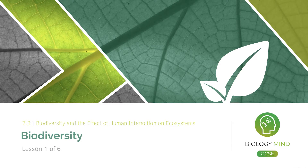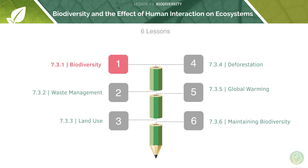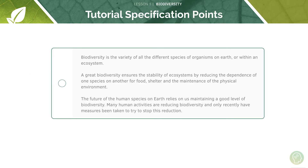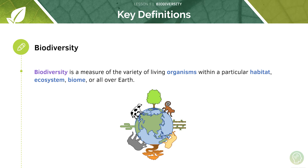Welcome to this tutorial on biodiversity. Today we are going to look at some key definitions and then consider the stability of environments. This is your specification point, so it's really short and simple. Biodiversity is a measure of the variety of living organisms within a particular habitat, ecosystem, biome, or all over the earth.